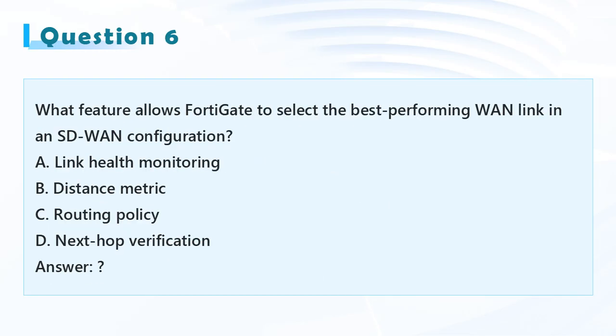Question 6: What feature allows FortiGate to select the best performing WAN link in an SD-WAN configuration? A. Link Health Monitoring, B. Distance Metric, C. Routing Policy, D. Next Hop Verification.